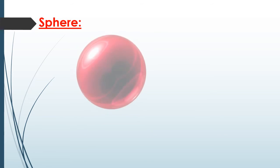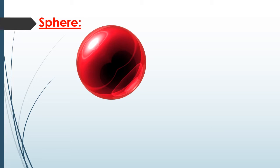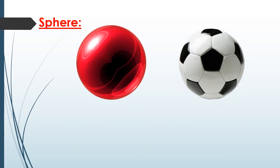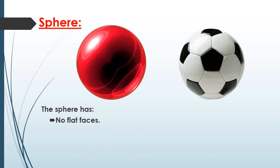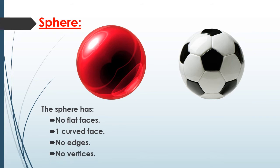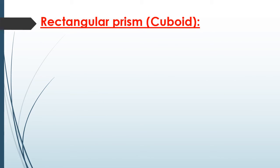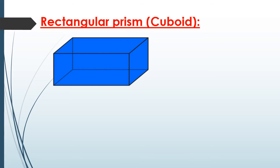The next shape is not a ball, but it is like a ball — this is called a sphere. The sphere is like a ball in real life. It has no flat faces, but it has one curved face, no edges, and no vertices.